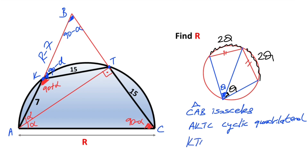So here the angle must equal 90 minus alpha, and therefore triangle KTB is also an isosceles triangle, with these two sides equal.